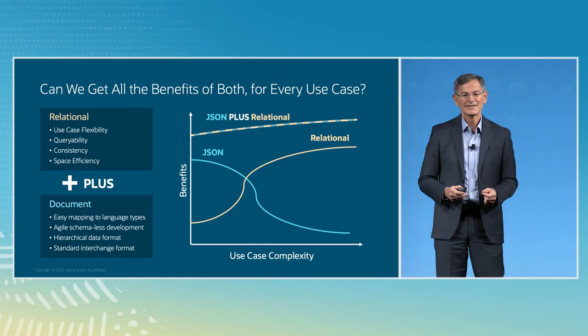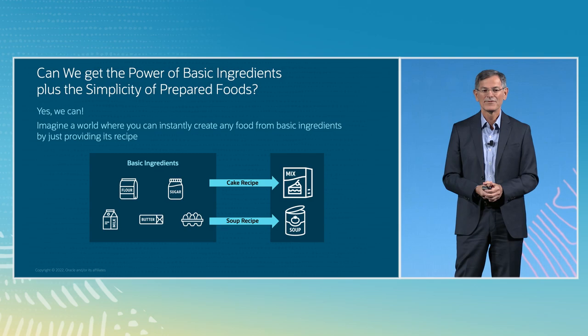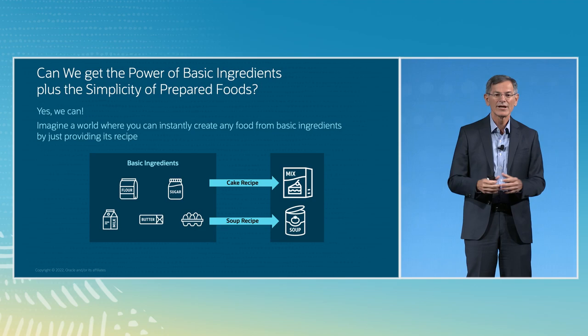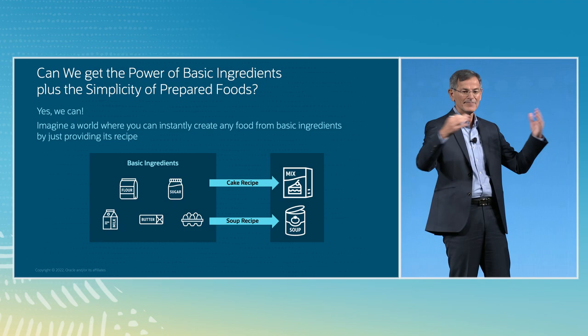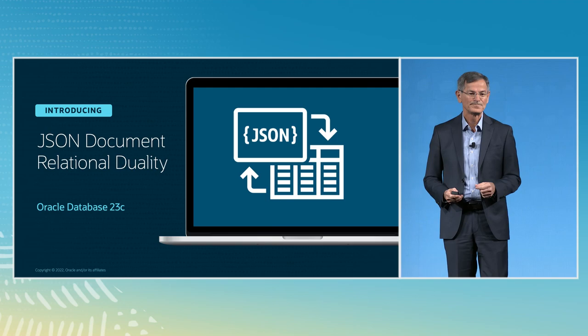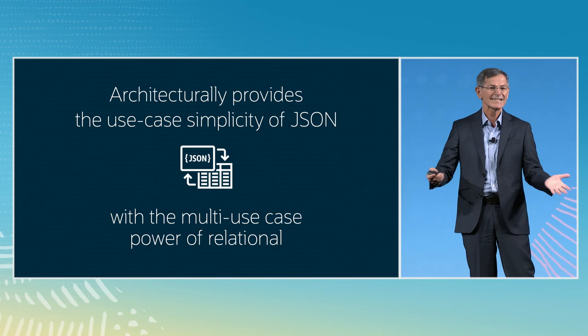What you really want is the sum of the two cases. Back to the cake analogy — can we get the power of cooking with basic ingredients plus the simplicity of prepared foods? Because this is a virtual environment, not a physical one, we can. You can imagine a world where you start with basic ingredients, but you can create any food you want if you just give the system a recipe. And that's what we're introducing with JSON Document Relational Duality, a new feature of Oracle Database 23C. It architecturally provides the use case simplicity of JSON with the multiple use case power of relational.